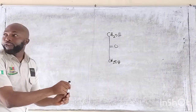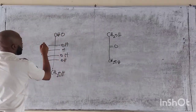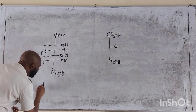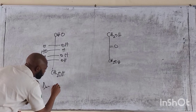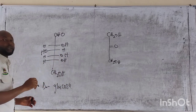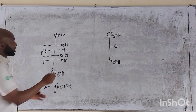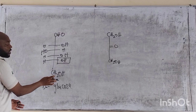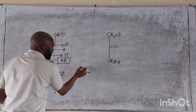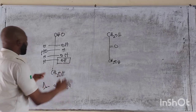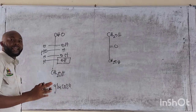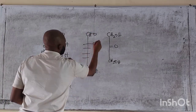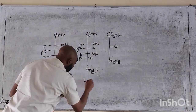Let's take glucose for example. This is D-glucose because it rotates the plane-polarized light to the right. The second-to-last OH is at the right side — that makes it a D. But if it is at the left, it makes it an L-glucose. This one is a D-glucose.